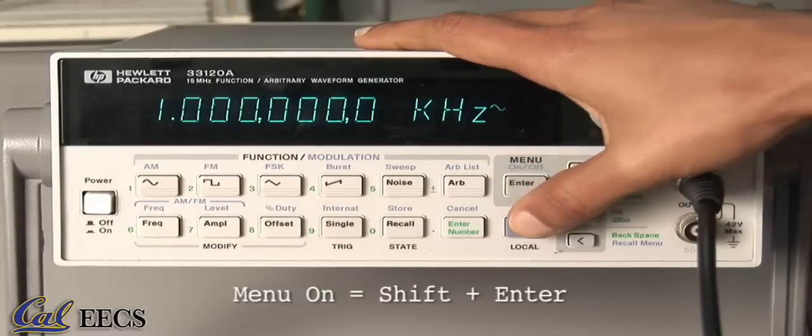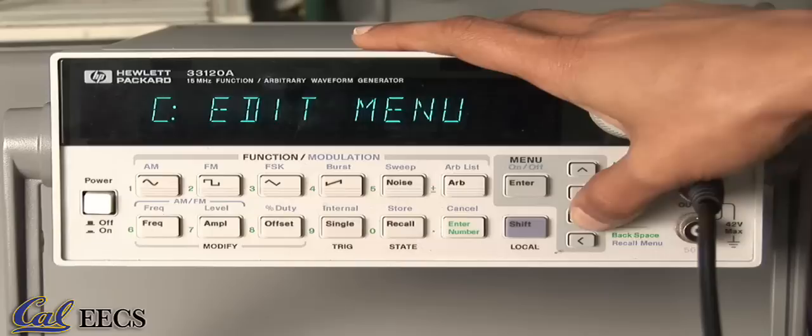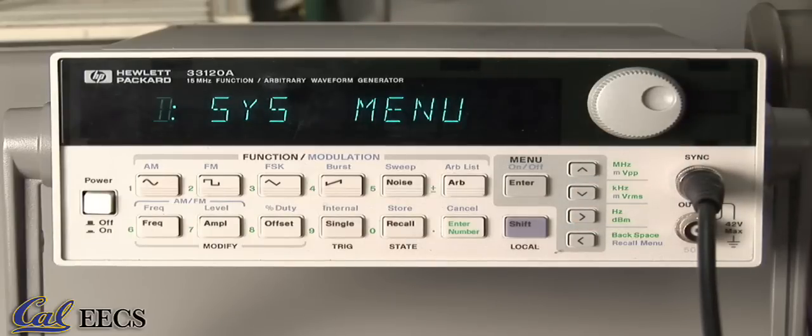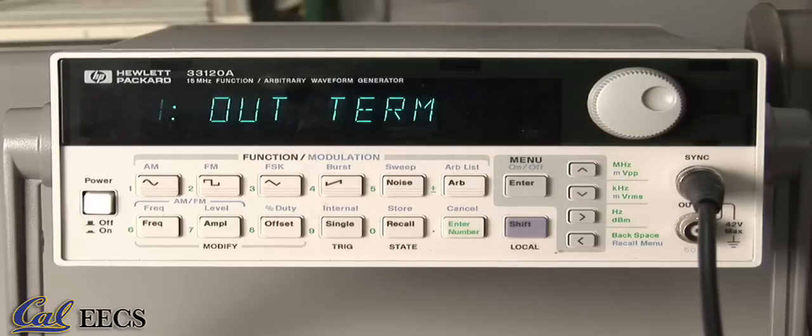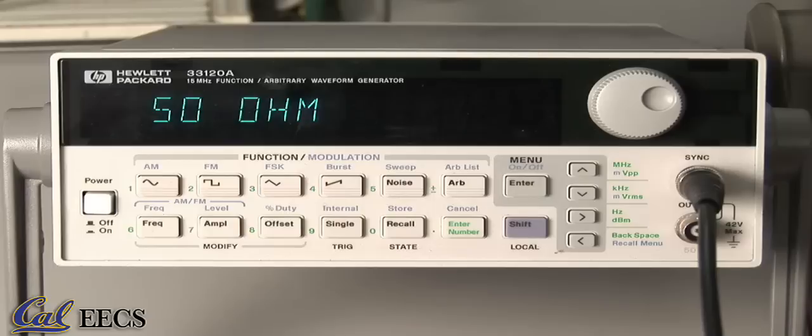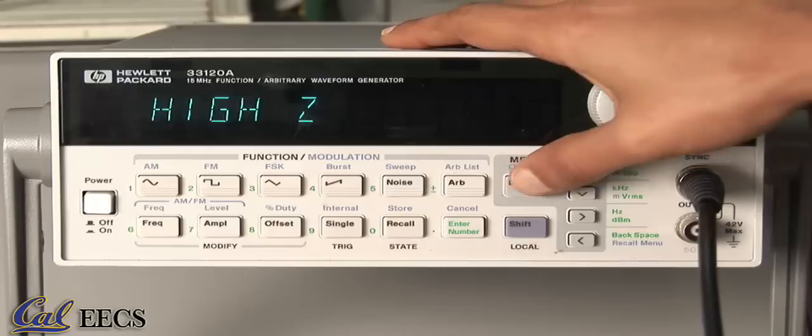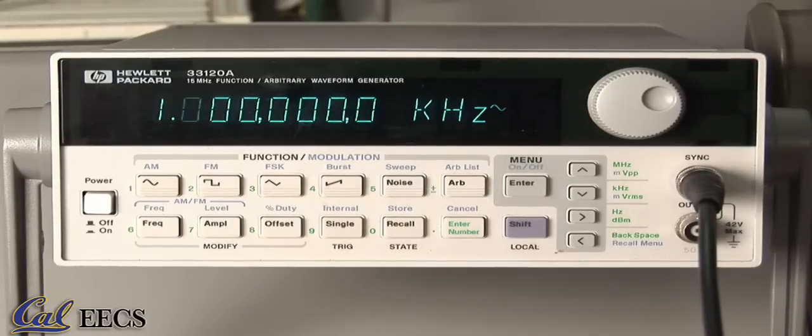Press menu. You should see mod menu on the display. Press the right arrow key three times. You should see system menu on the display. Press the down arrow key once. You should see out term on the display. This means output termination which is your load resistance. Press the down arrow key again. You should see 50 ohm on the display. Press the right arrow key. You should see high z on the display. Press enter. The instrument is now set for correct operation with high impedance loads.